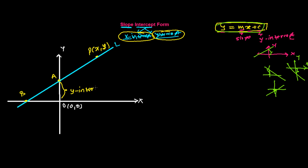Since we're working with y-intercept, let's call it c. Since A is on the y-axis, its x-coordinate is zero, so the coordinate of point A is (0, c). Now suppose line L makes an angle θ with the positive x-axis measured anti-clockwise, which means the slope of the line is tan θ.